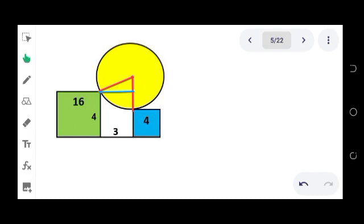For the blue square, the area is 4 square units, therefore the side is 2 units. Now by symmetry, this part is 2 units. That means this part here is also 2 units.